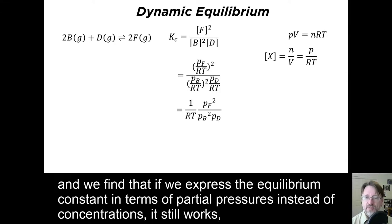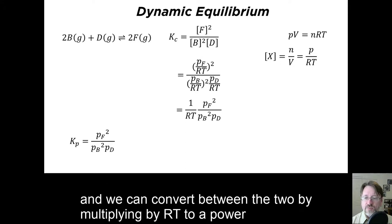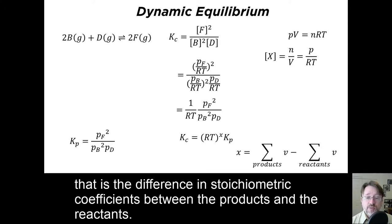and we find that if we express the equilibrium constant in terms of partial pressures instead of concentrations, it still works. And we can convert between the two by multiplying by RT to a power that is the difference in the stoichiometric coefficients between the products and the reactants.